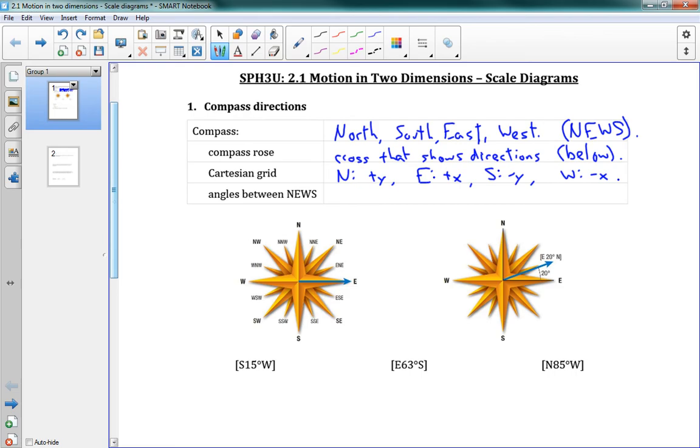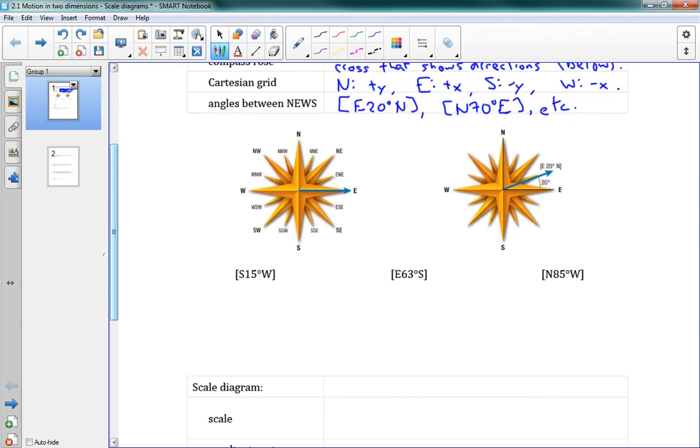Now, we can have angles between north, east, west, and south. If I want to write an angle that's partway between north and east, I could write, for instance, east 20 degrees north, or I could write north 70 degrees east. Notice that east 20 degrees north means I'm starting going east, and I go 20 degrees to the north. That's the same as saying north 70 degrees east. So there's two different ways of writing that same direction.